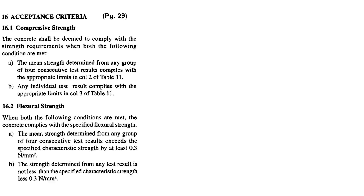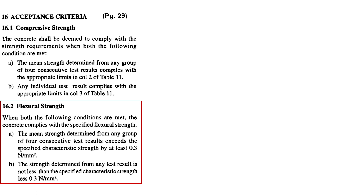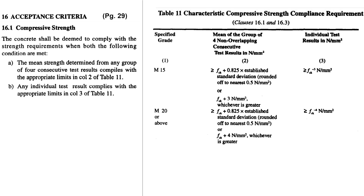Clause 16 of IS 456 on page 29 stipulates the acceptance criteria of concrete. Sub Clause 16.1 describes the acceptance criteria from a compressive strength point of view and Sub Clause 16.2 describes the acceptance criteria from a flexural strength point of view.